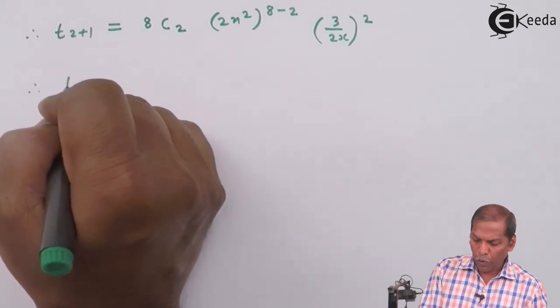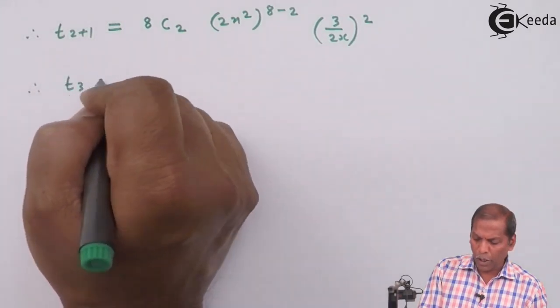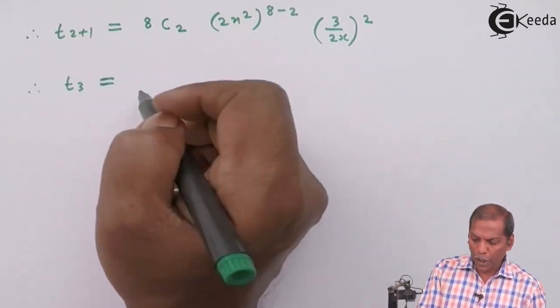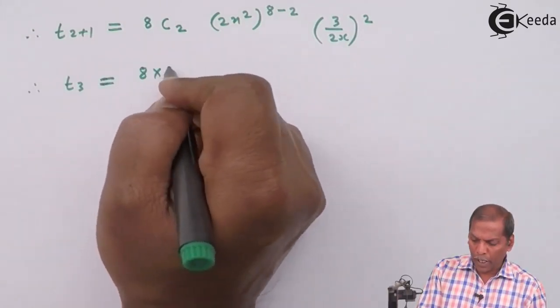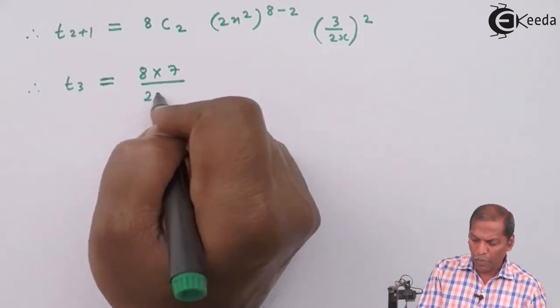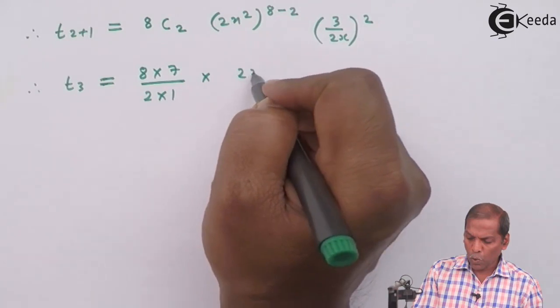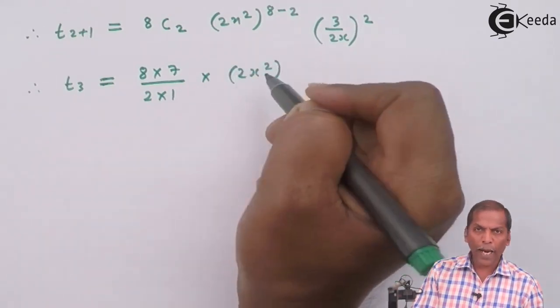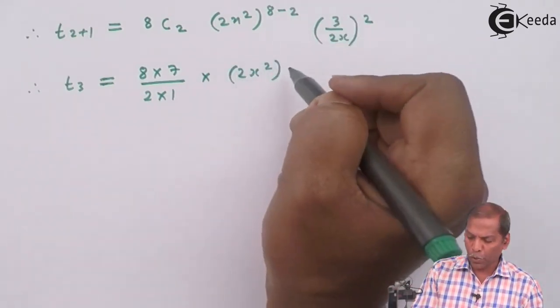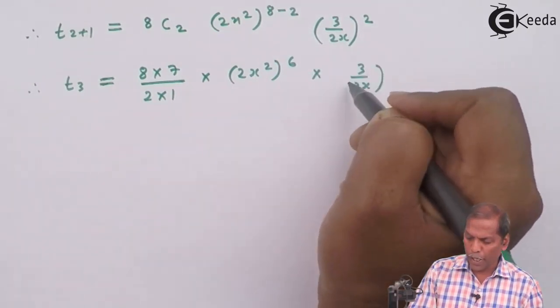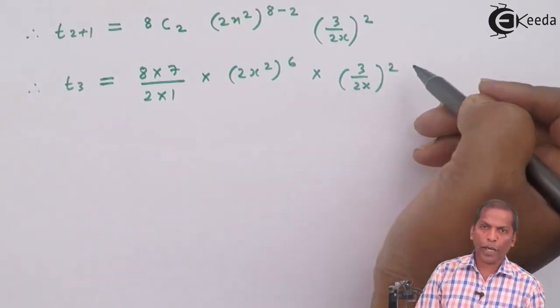Therefore t₃ = 8C2, that we can write as (8×7)/(2×1) × (2x²)⁶ × (3/2x)².